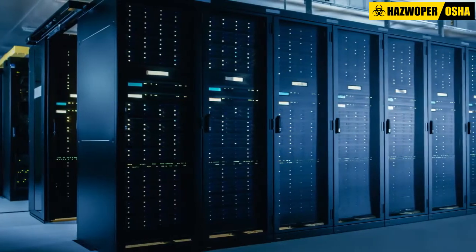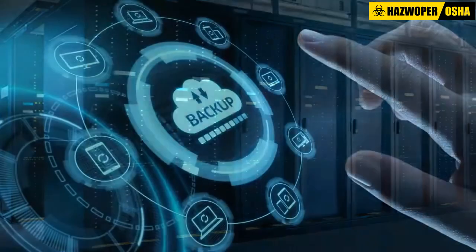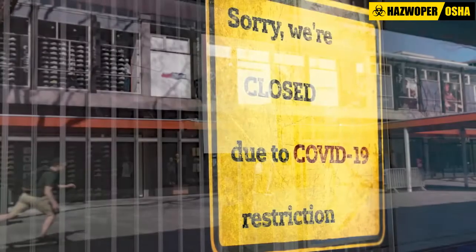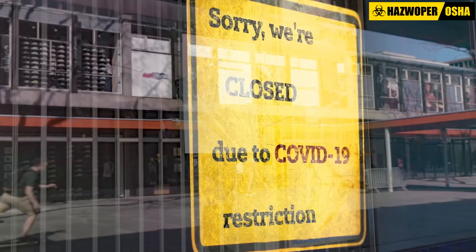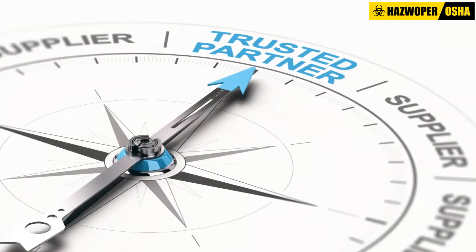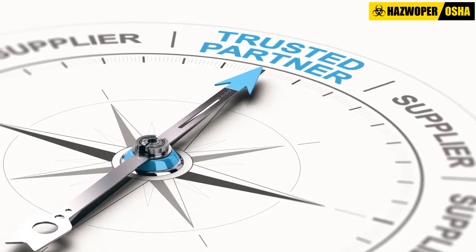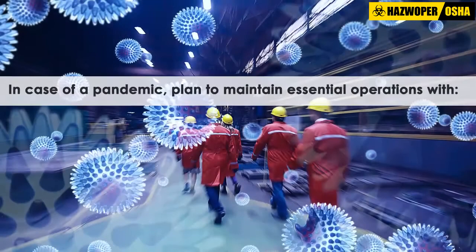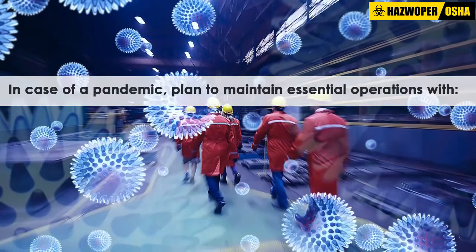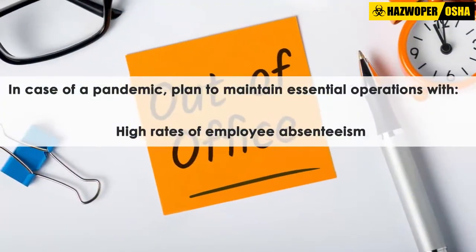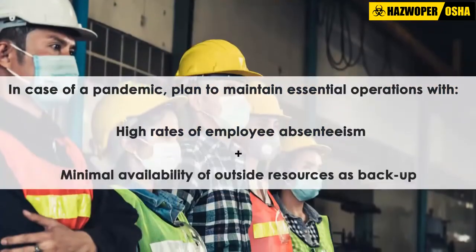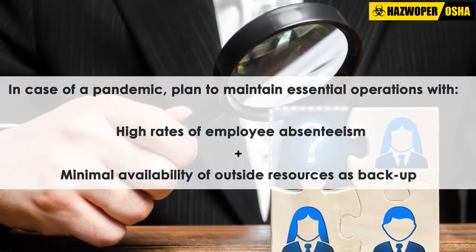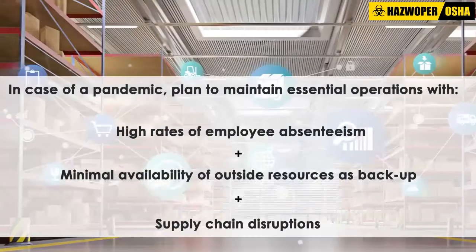There may be some areas of the business which must remain fully functional with a backup system in place. In contrast, other areas may have to be temporarily shut down. It is also important to remember that during a pandemic, the community that businesses rely upon will also be in crisis. Therefore, businesses must plan for maintaining essential business operations with higher rates of employee absenteeism, minimal availability of outside resources such as temporary labor and contractors as a backup, and supply chain disruptions.